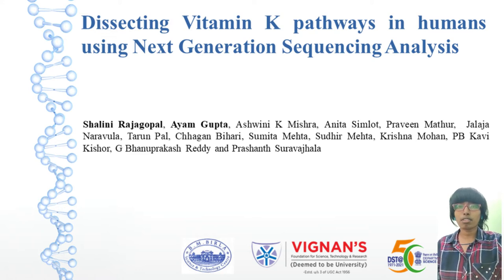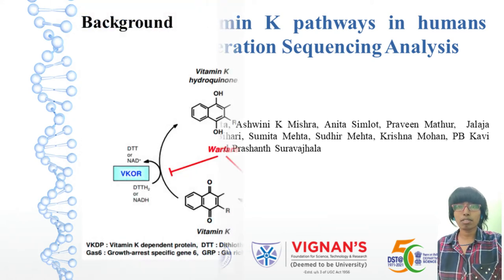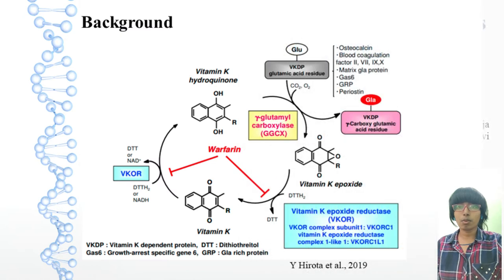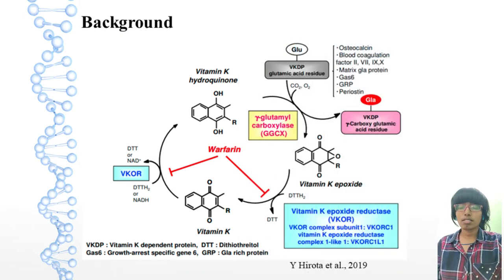Vitamin K is a fat-soluble vitamin that affects coagulation pathways within the body. It is essential for the synthesis of coagulation proteins.